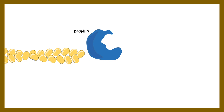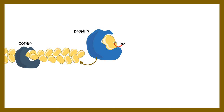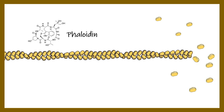Profilin works like an ATP exchange factor — it exchanges ADP for ATP on G-actin, helping recruitment into the barbed end. There is also cofilin, which can bind to filamentous actin and sever the actin filament. These proteins, which stabilize or destabilize actin filament associations, will be covered in more detail in a separate video.